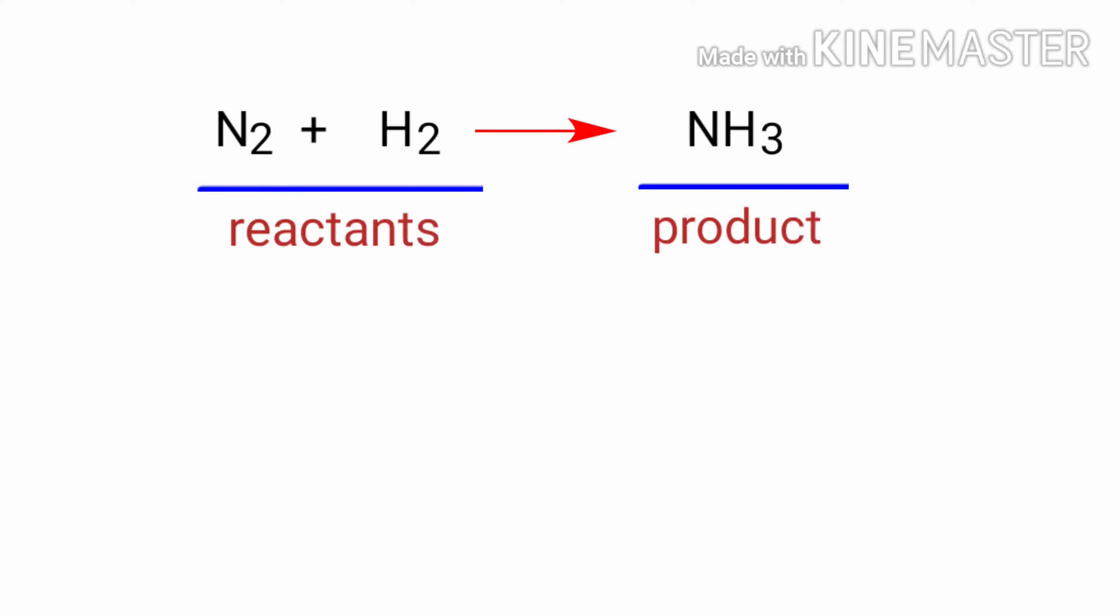In this equation, the reactants are Nitrogen and Hydrogen, and the product is Ammonia. If you look at this equation, the equation is not balanced.